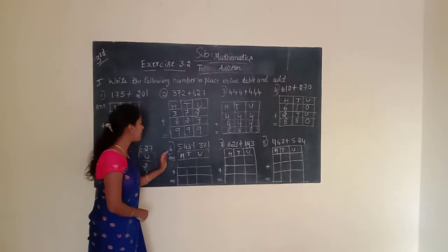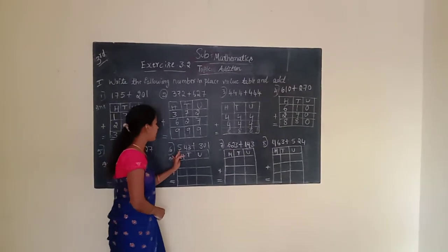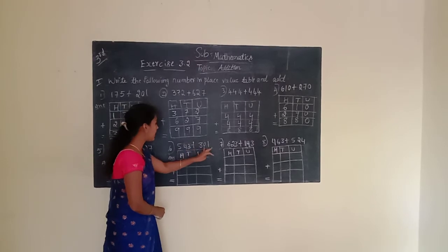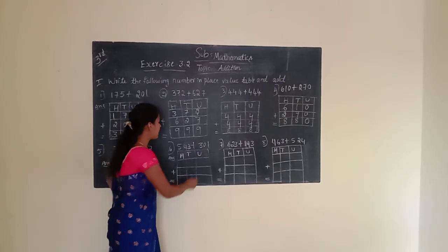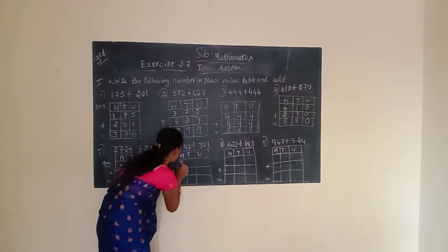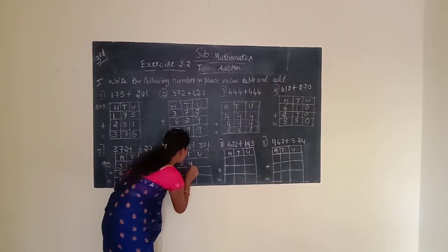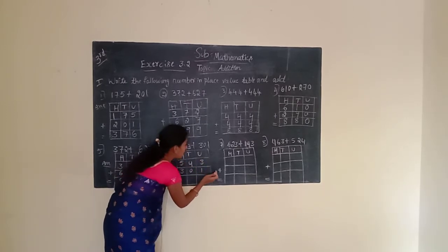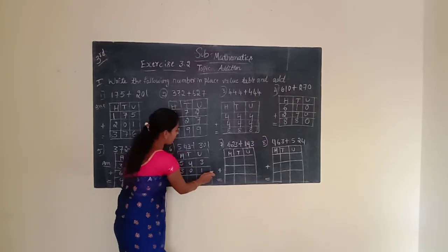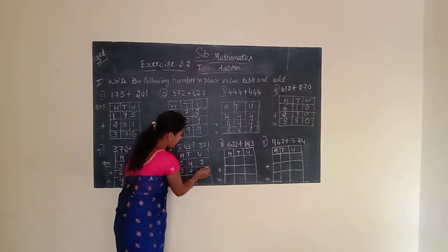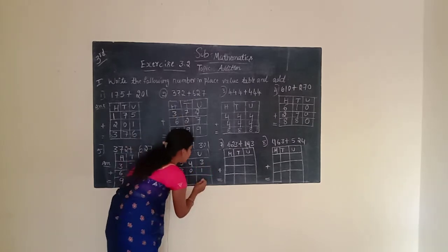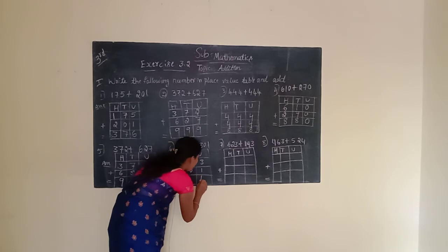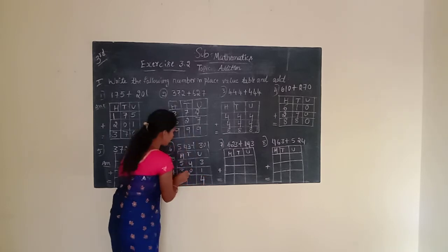Sixth question. The given number is 543 plus 301. Arrange this number in the place value chart — 543 plus 301. Now we have to start adding. First, we have to start from the unit place. Unit place is having 3 and 1. 3 plus 1 is 4. We have to write 4.